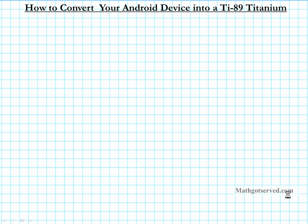Good day students. I'm going to be going over instructions on how to convert your Android device — a cell phone or a tablet — into the most powerful calculator out there, the TI-89 Titanium. This calculator does calculus that is unbelievable. Here are the steps on how to access this amazing calculator.